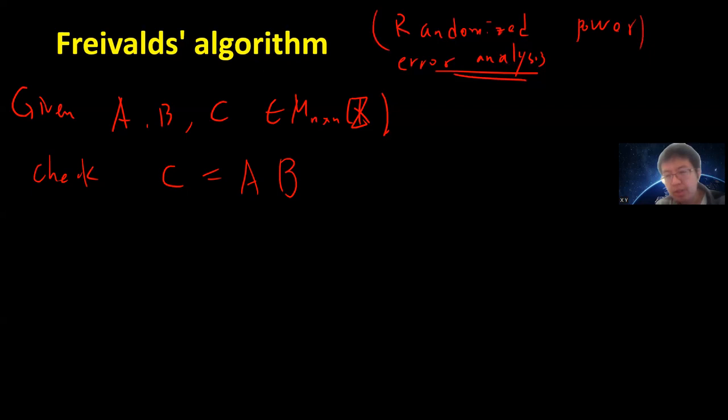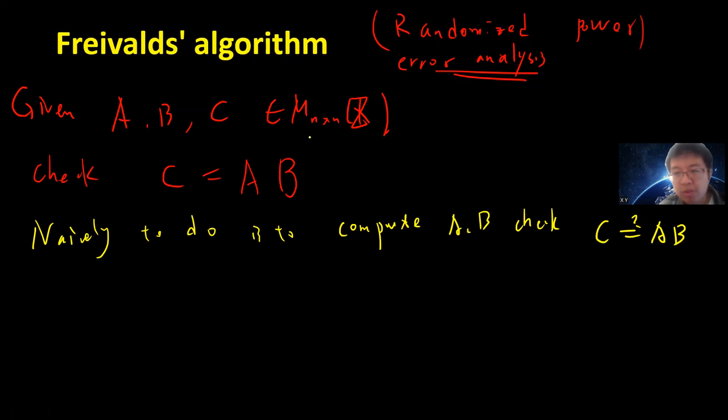So somebody gives you three n-by-n matrices A, B, C and you need to check whether C equals A times B. The naive way to do this is to compute A and B, then check where C equals AB. This will require fast matrix multiplication, maybe it takes n to the 2.3 or something to check.